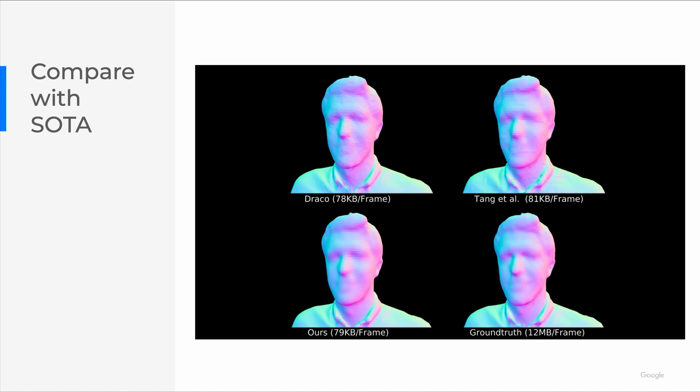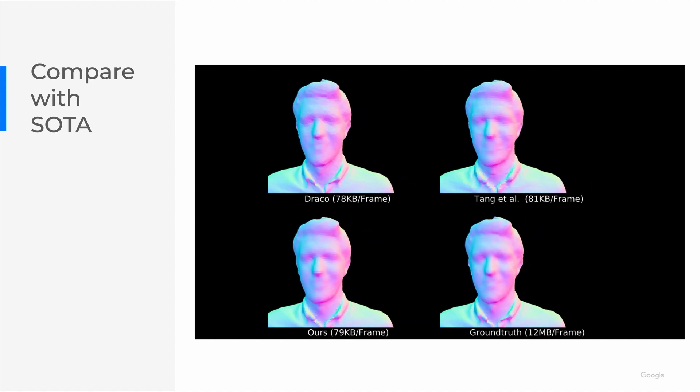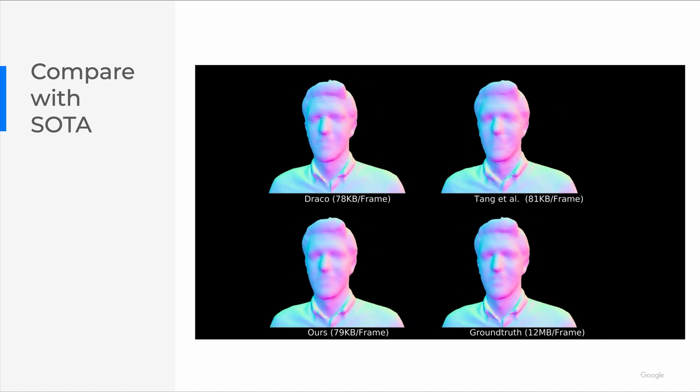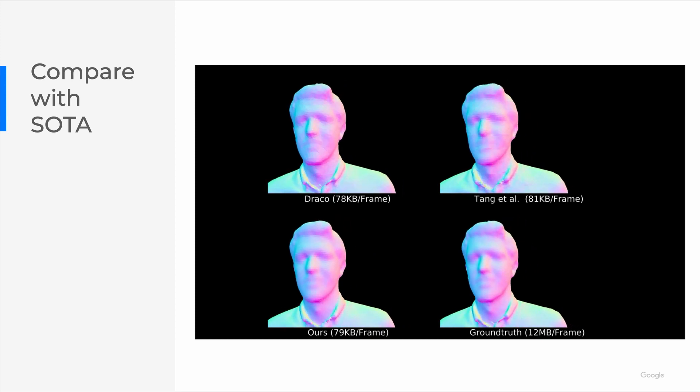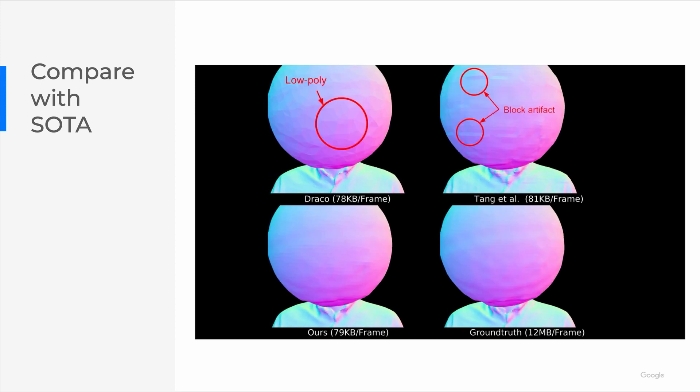This video shows us the comparison with Draco and our previous work, given similar rate budget. For Draco to be able to achieve the same compression rate, we need to decimate the meshes, and as a result, lose mesh quality. Our previous work suffered from block artifacts, while this work can achieve similar quality to ground truth.